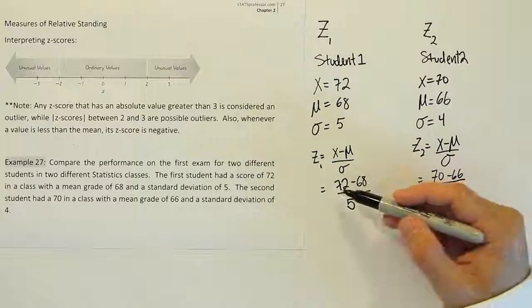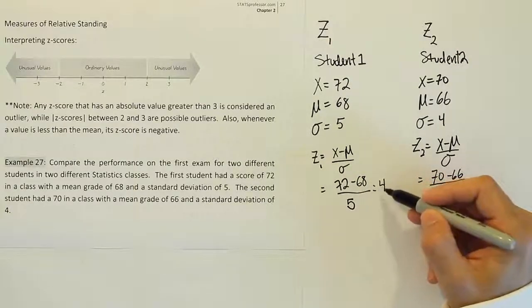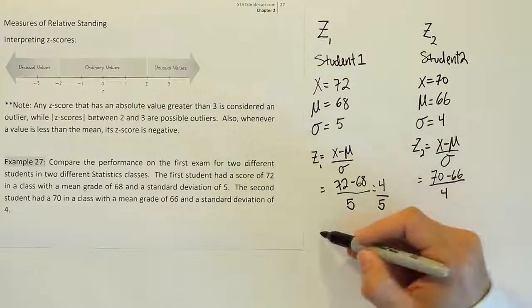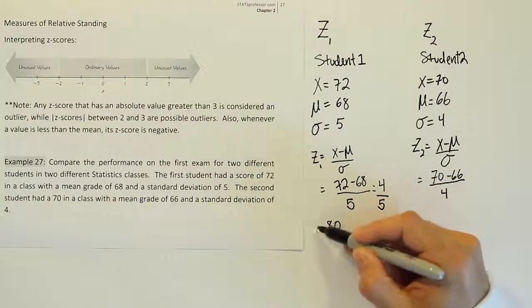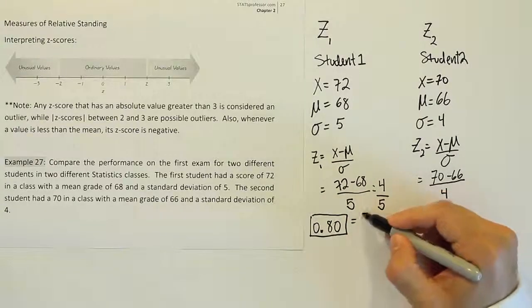Okay, so let's quickly look at this one. The difference between 72 and 68 is 4, and that will be divided by 5. And 4 fifths as a decimal is 0.80. So that's the z-score for the first student. That is z-score 1.